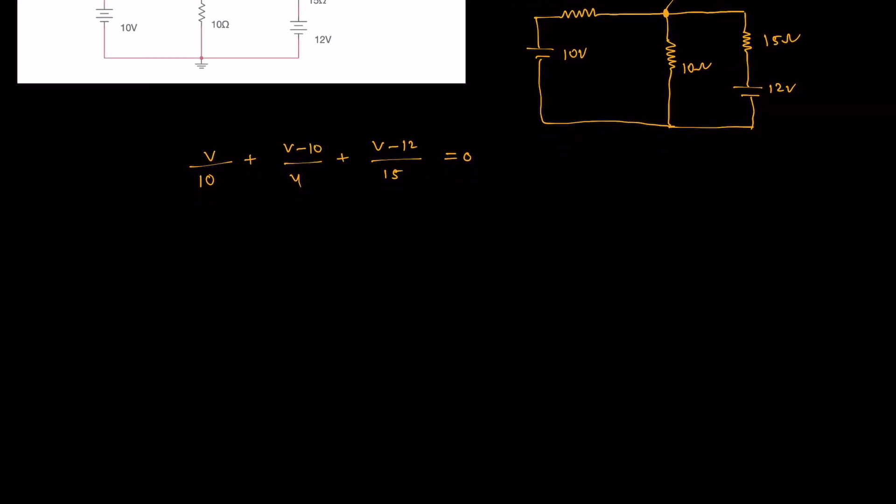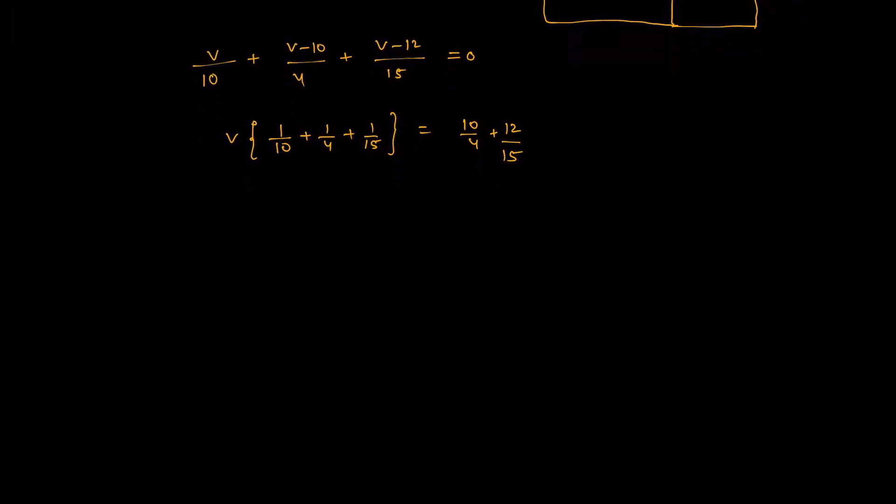Now let's solve for the voltage V. Let's write like this: 1/10 + 1/4 + 1/15. On the other hand, the right side is 10/4 + 12/15. Let's simplify: this is 10/4 which is 2.5, and 12/15 which is 0.8, so this is 3.3 volts.